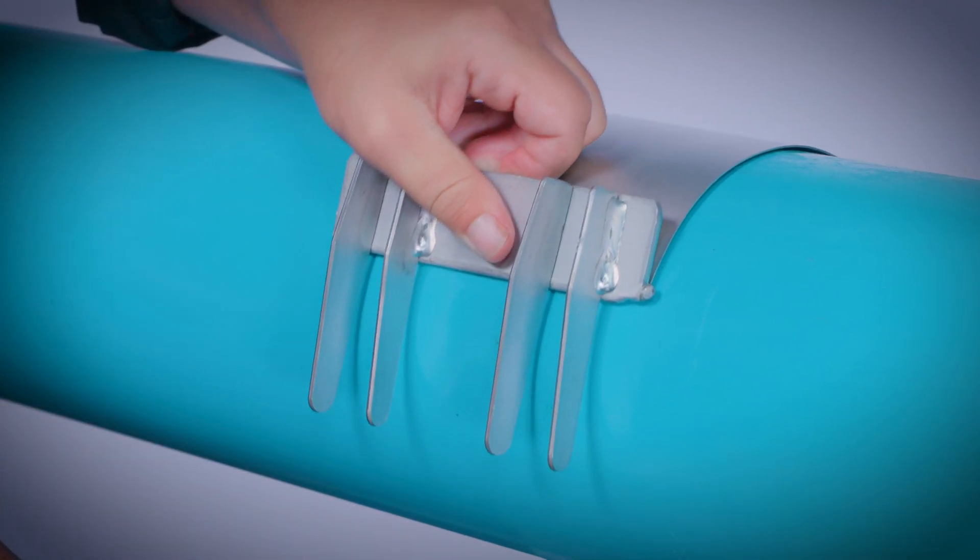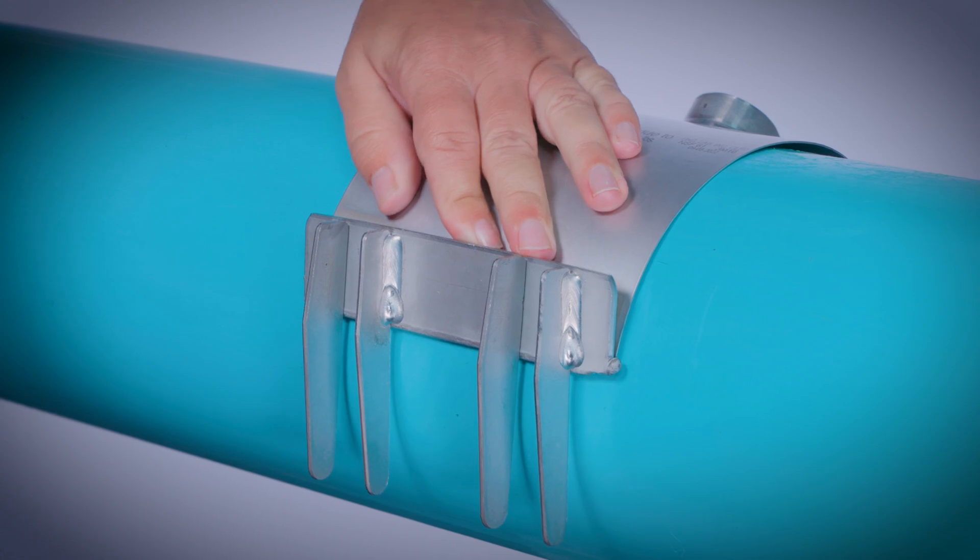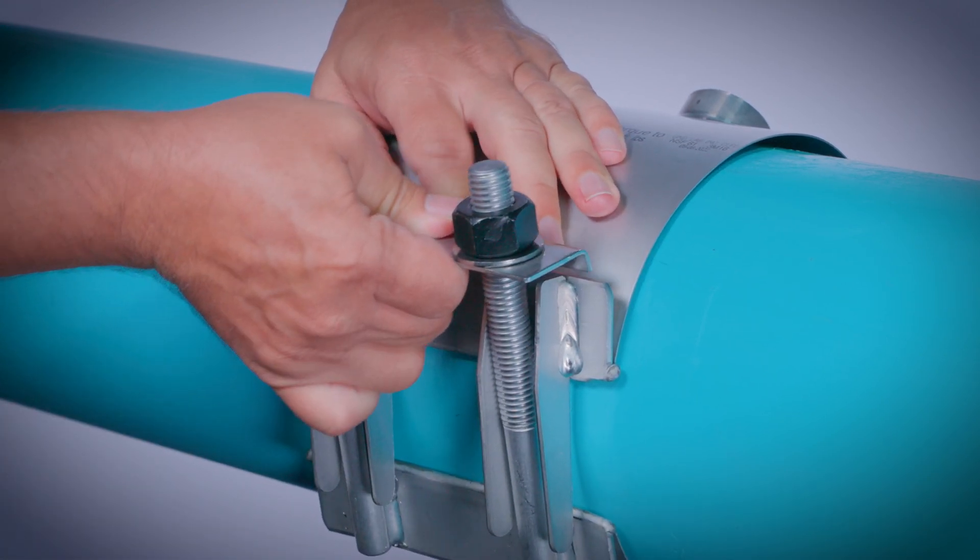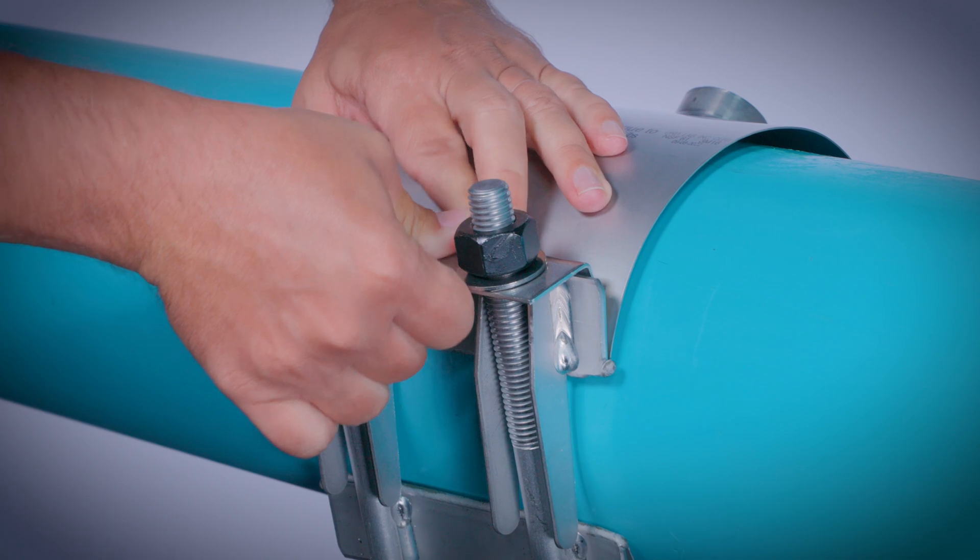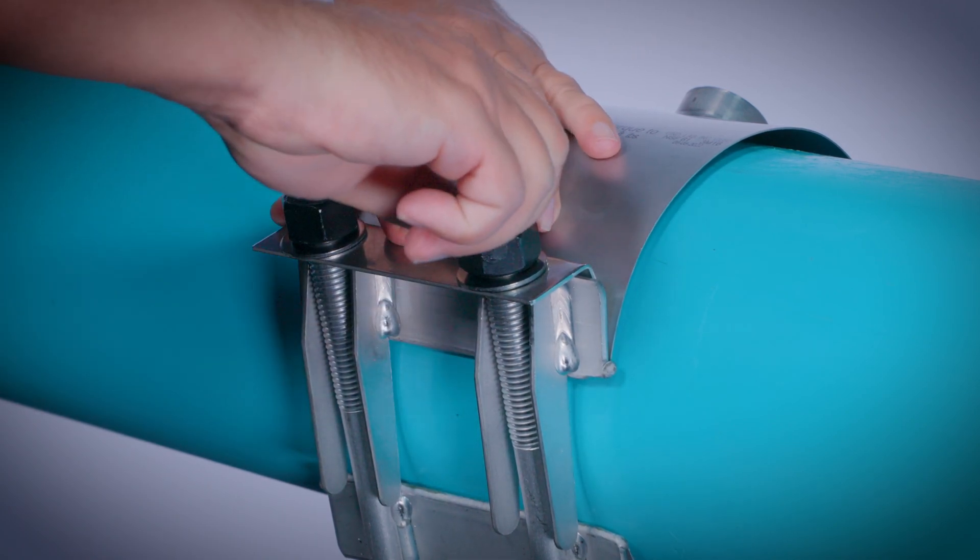Mount the saddle on the pipe with the outlet facing the desired direction. Slide the lifter bar up the profile of the receiver lugs, hook it into place and hand tighten the nuts.